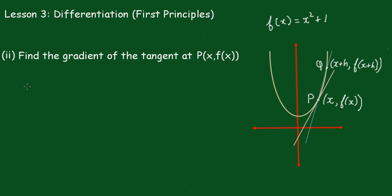We'll start with the gradient of the secant PQ, which is the difference in the y values: [f(x+h) - f(x)] / [(x+h) - x], which simplifies to [f(x+h) - f(x)] / h.